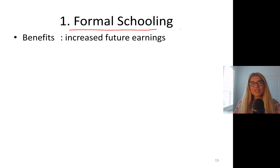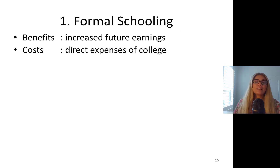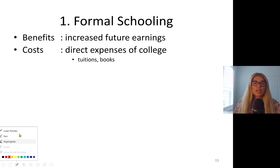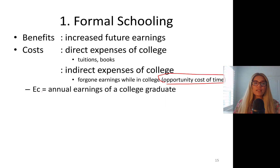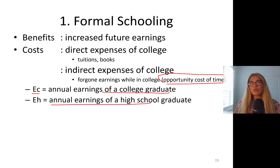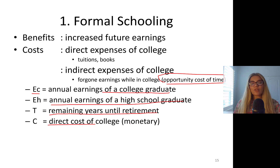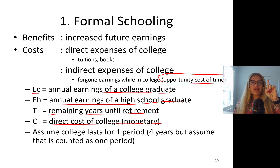Now let's talk about the formal schooling decision. The benefit of formal schooling is increased future earnings. The costs of college include direct expenses such as tuition and books, and indirect expenses — foregone earnings while in college. That is the opportunity cost: you could be working full-time instead. Let's define: Ec = annual earnings of a college graduate, Eh = annual earnings of a high school graduate, t = remaining years until retirement, and c = direct cost of college.